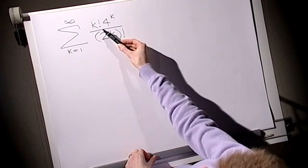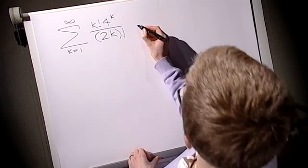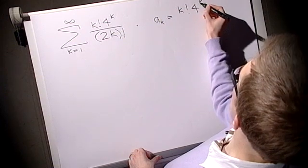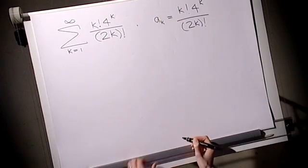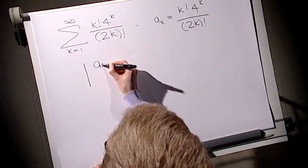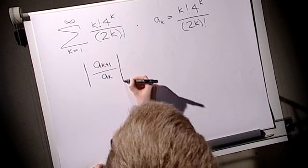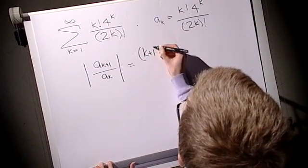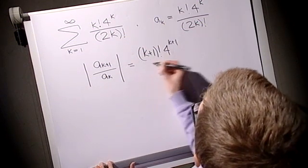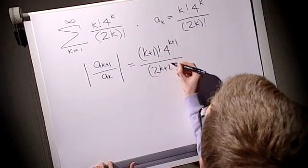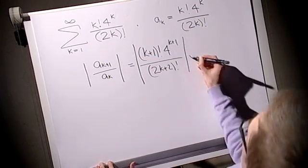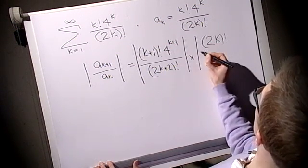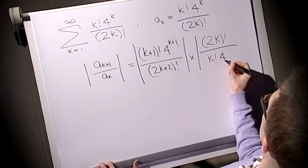We're trying to sum k factorial, 4 to the k over 2k, all factorial. So what do the terms look like? In general, a_k is just k factorial times 4 to the k over 2k factorial. And we go straight ahead and we work out the modulus of a_{k+1} over a_k. Doesn't look very nice, but let's have a go. k plus 1 factorial, 4 to the k plus 1, 2 to the k plus 2, factorial, modulus. This gives us the a_{k+1} term. The a_k term will turn it upside down. 2k factorial over k factorial 4 to the k.